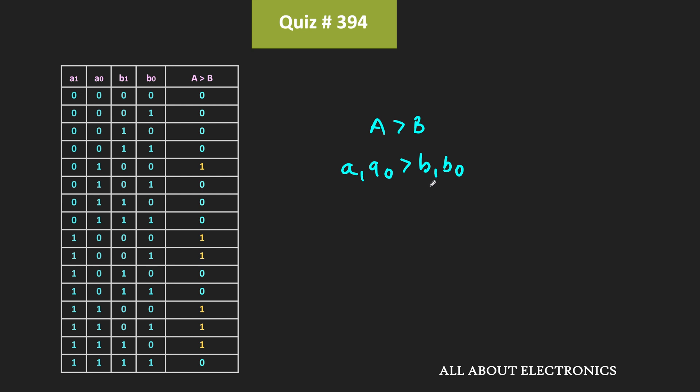As you can see, for six different input combinations, the output of the function f is equal to 1. In one case, a1 a0 is equal to 01 while b1 b0 is equal to 00, meaning a is greater than b. In the next two cases, a1 a0 is equal to 10 while b1 b0 is equal to 00 and 01 — so a is greater than b. And in three more cases, a1 a0 is equal to 11 while b1 b0 is equal to 00, 01, and 10, meaning a1 a0 is greater than b1 b0. So for these six different input combinations, number a is greater than b.